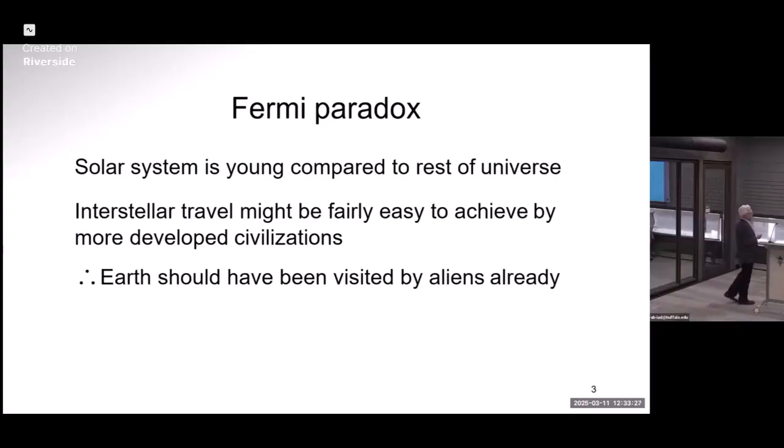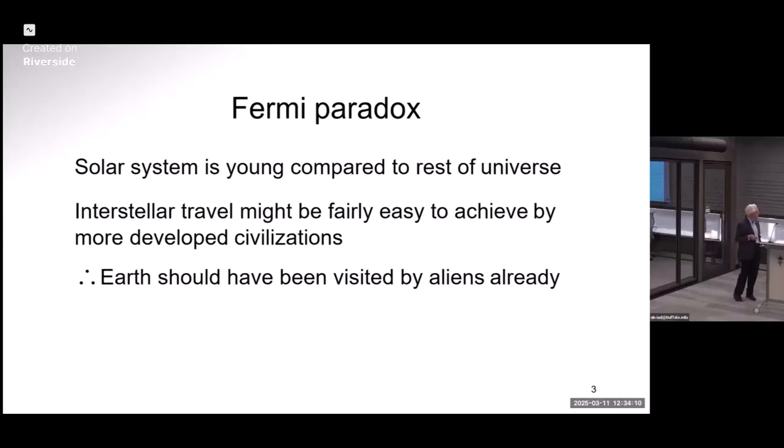The Fermi Paradox says that statistically speaking, there must be many planets with civilizations which are more developed than our civilization. Maybe they have real AI on those planets. And the idea is that they will find a way of creating interstellar travel by some kind of teletransportation or by reaching the speed of light. But then the question is, where are they?